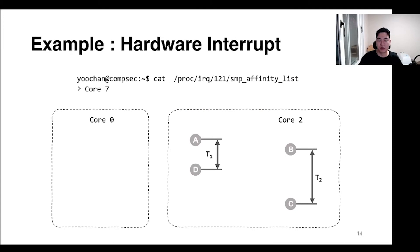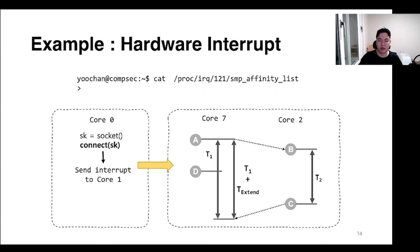Here is an example of a hardware interrupt. First, check the SMP affinity of the IRQ — this is a specified value indicating which core handles the interrupt when a hardware interrupt occurs. So pin the thread to the corresponding core. And when core 0 executes the connect system call, it will send the IRQ to core 7.